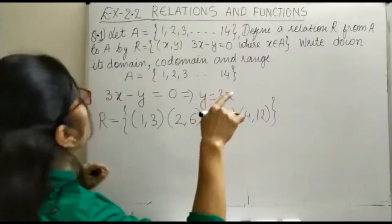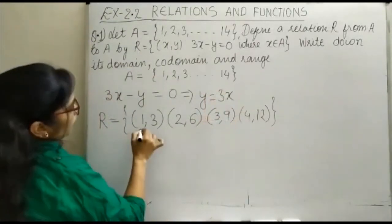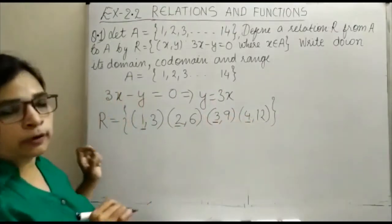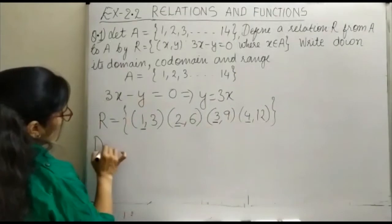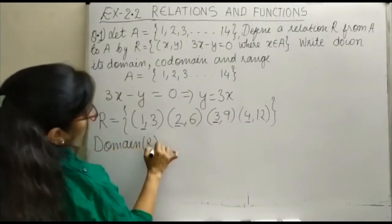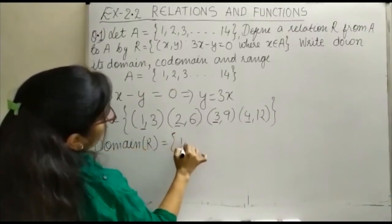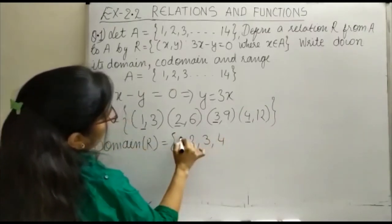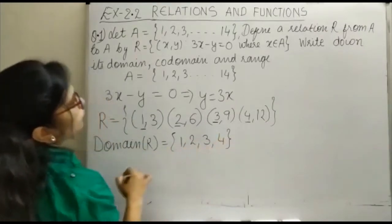Now, we are supposed to write down its domain. Domain is always the collection of first element of the order pair. तो आपका जो domain हो जाएगा, domain of R, that is relation, यह आपका collection of first order pair, that is 1, 2, 3 and 4.